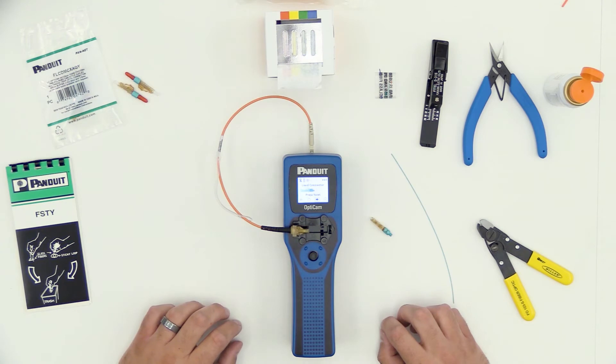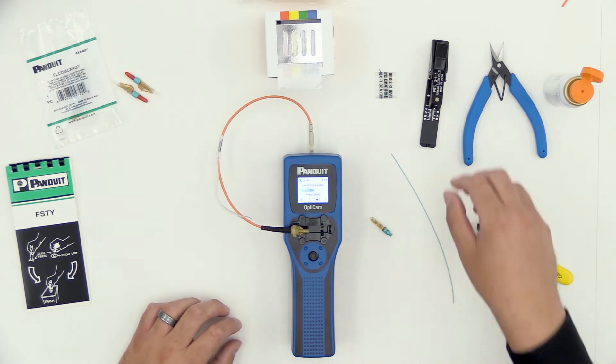All right, next we're going to go through the cable prep. This is probably one of the most important stages of the whole process. Good cleaning and cleaving practices are essential to good terminations for fiber connectors. You can review those processes through our website on the instructional sheets.